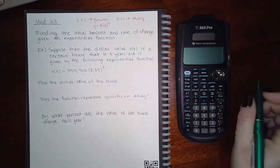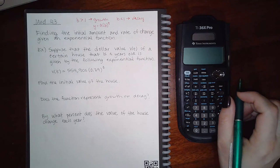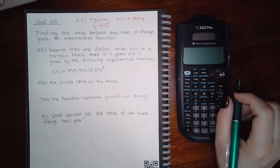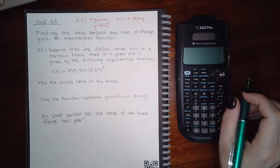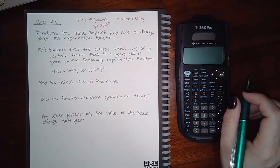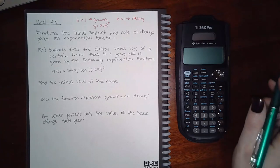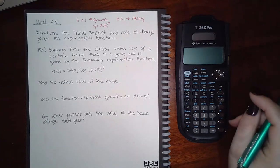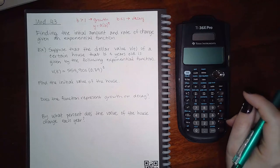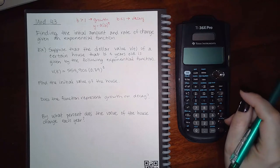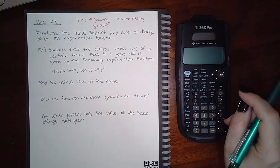Okay here we are on Module 43. This module has only about four topics, but they are all word problems, so we're going to work through them. It's about half as long as all the other modules. Finding the initial amount and rate of change given an exponential function.